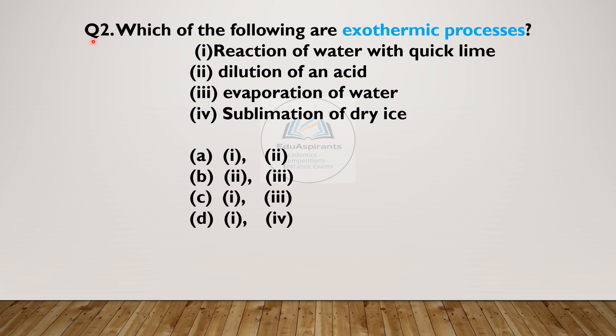Question 2. Which of the following are exothermic processes? (i) Reaction of water with quicklime, (ii) Dilution of an acid, (iii) Evaporation of water, (iv) Sublimation of dry ice. Choices: A) 1 and 2, B) 2 and 3, C) 1 and 3, D) 1 and 4. Marked your answer? Let us see if you have marked it correct. Answer is A, choices 1 and 2: reaction of water with quicklime and dilution of an acid.